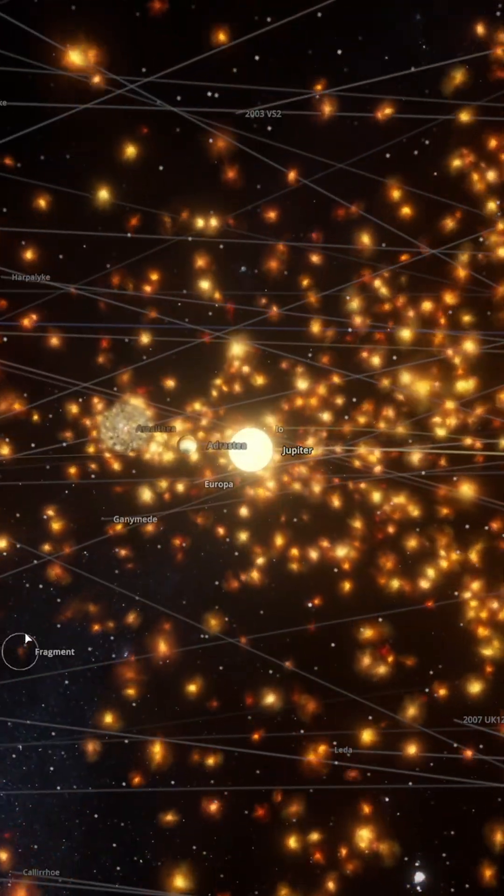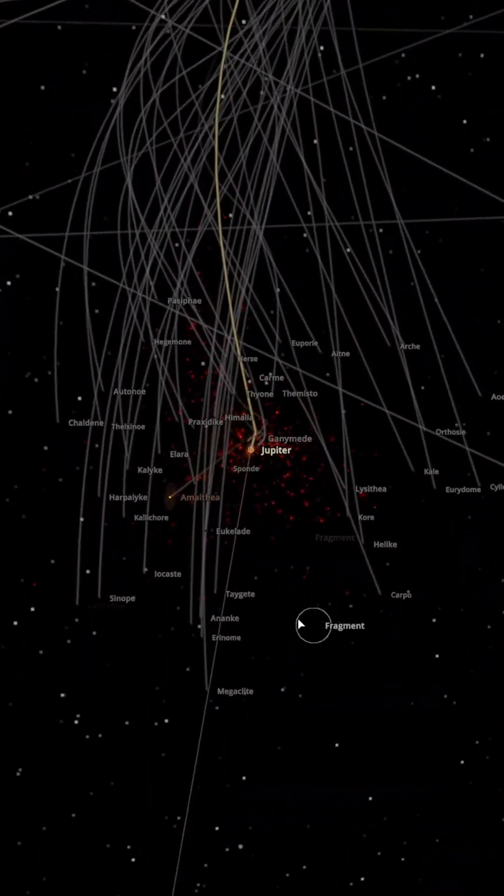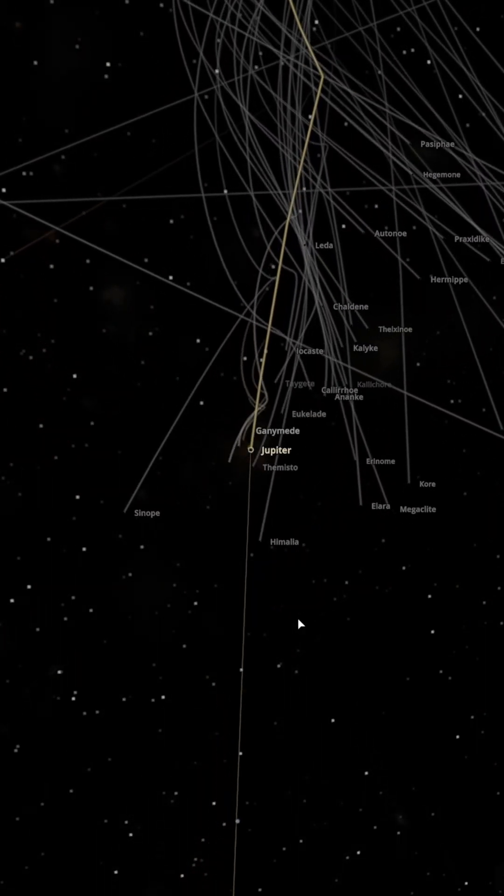It looks like Jupiter wins, but the victory wasn't easy. We can clearly see that Jupiter's orbit has been deviated from its original path around the Sun by Saturn's collision.